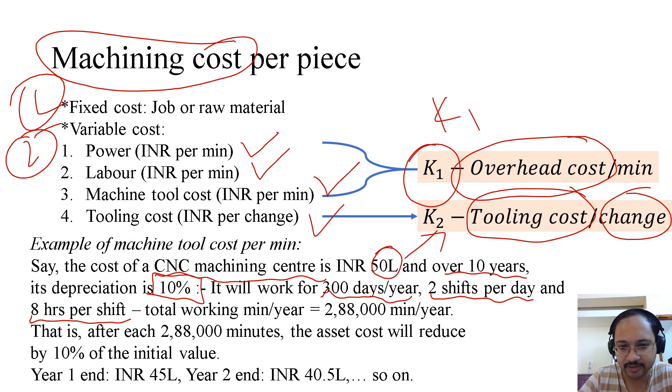So if we calculate that, we'll get 2,88,000 minutes per year. So that is the working time of the machine. In each year, after 2,88,000 working minutes or operating minutes, the asset cost will be reduced by 10% of its initial value. That's the depreciation. That means, after year 1, the cost becomes 45 lakhs. After year 2, the cost becomes 40.5 lakhs. That is 10% on 45 lakhs, that's 4.5. So you subtract 4.5 from 45 and you get 40.5. Like this, gradually the cost reduces or depreciates.